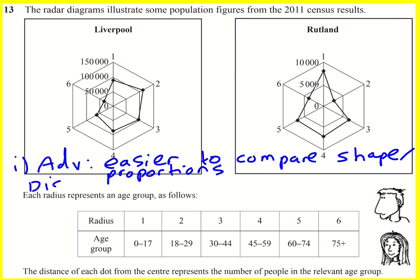The disadvantage is that it's going to be harder to compare actual sizes. It's harder to read off and compare one diagram directly with the other — just looking at the graph, it's not going to be obvious. For example, although it looks like we've got a lot of people in one area, it's still actually much less than the number of 0-to-17-year-olds in Liverpool.